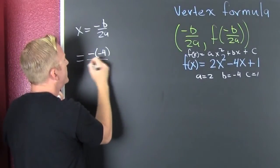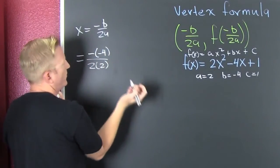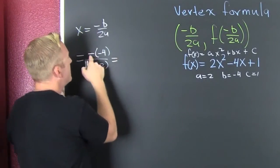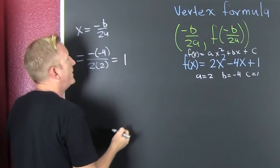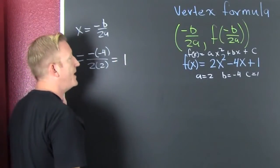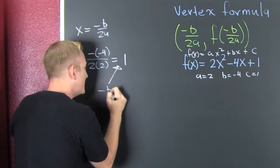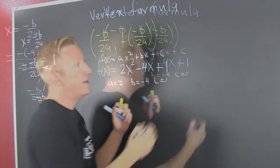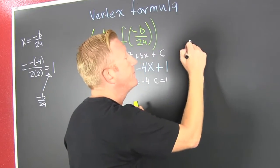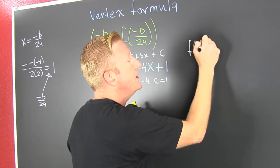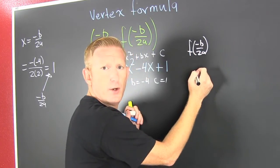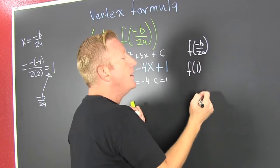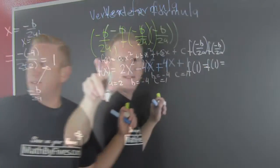I can plug those values in: that's minus negative 4 over 2 times 2. Nice numbers — minus and minus is plus, over 4 is 1. So my x value is 1. That right there is -b over 2a. Now we're looking for f of 1.